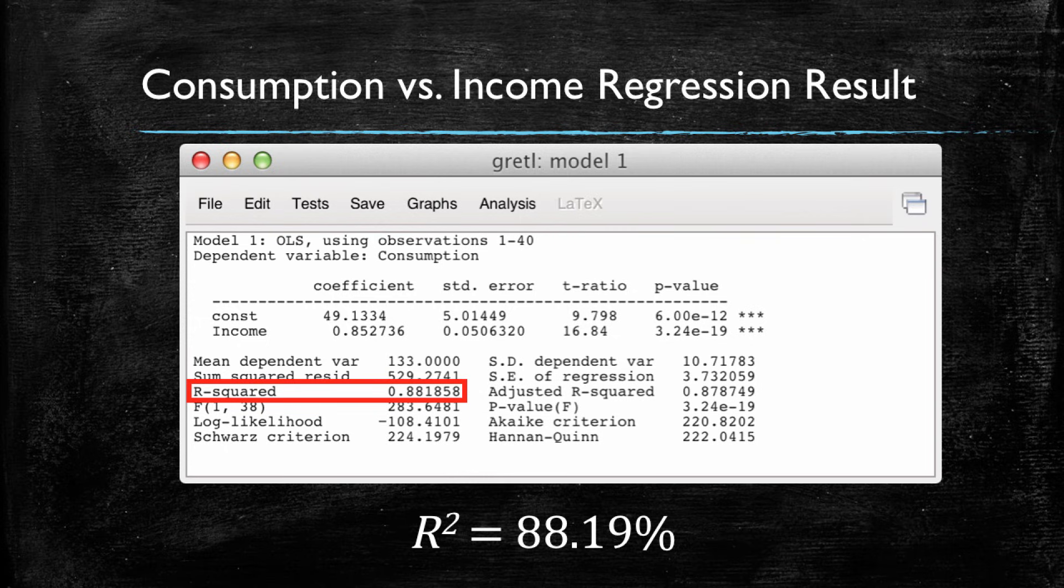The R squared on its own will not really tell us if a model is good or bad. There are going to be different types of statistical models where the R squared might be even meaningless. However, if we have two models, we can compare their R squared. And the one with the greatest R squared is better explaining the variance in the dependent variable, which is what we want. So overall, we're going to be generally choosing the models with the higher R squared.